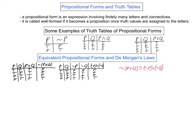In words, what it says is that the negation of the statement that either P or Q is true is the statement that neither P nor Q is true. From an algebraic point of view, it tells you how to distribute a negation across a disjunction: you should negate each of the individual propositions, and you should change the disjunction into a conjunction.